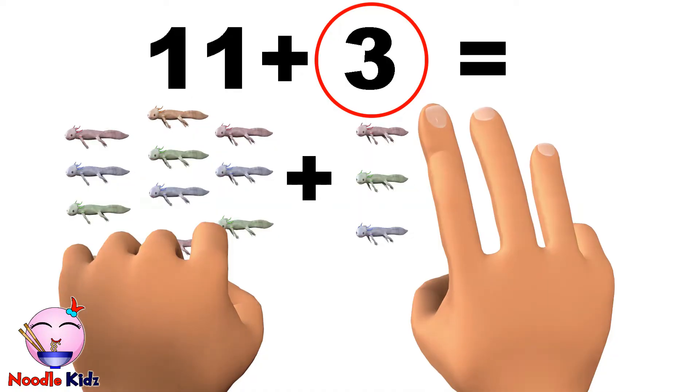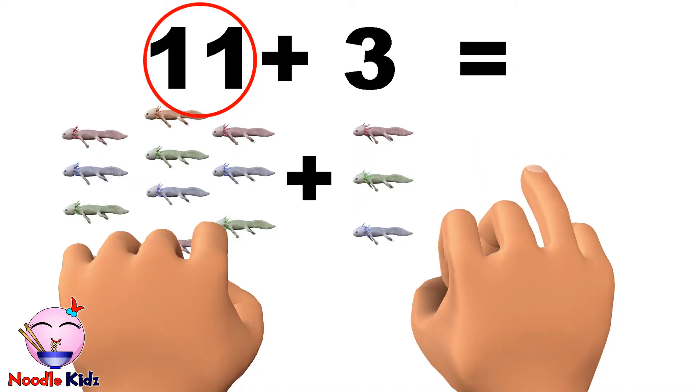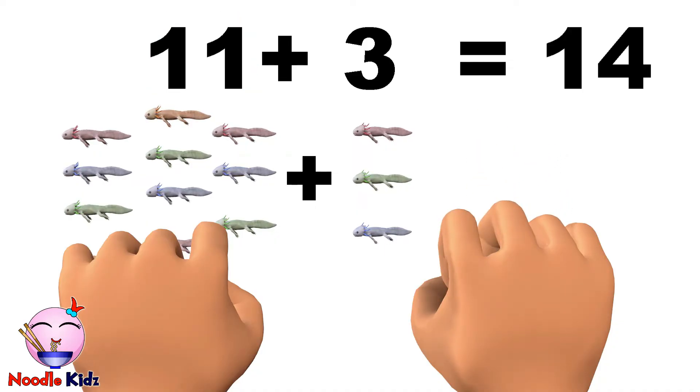Now, which one is the bigger number? Yes, 11 is the bigger number. Let's start adding the bigger number and then count on your fingers. 11, 12, 13, 14. Yes, the answer is 14.